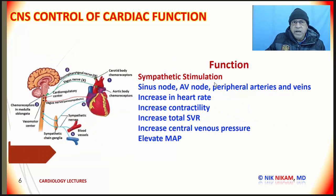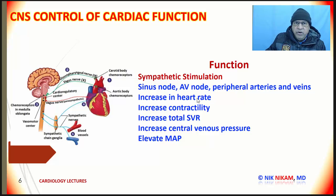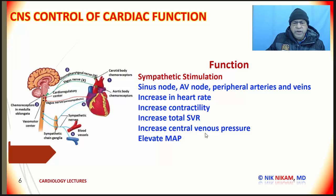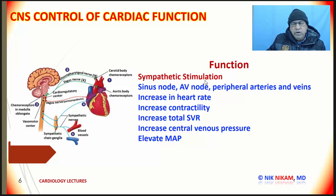Sympathetic stimulation acts on the sinus node, the AV node, and the peripheral arterioles and venules. There is an increase in heart rate, an increase in contractility of the left and right ventricles, an increase in total systemic vascular resistance through vasoconstriction, an increase in central venous pressure, and an elevated mean arterial pressure. These are all related to stimulation of the sympathetic nervous system through epinephrine or norepinephrine.